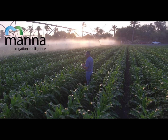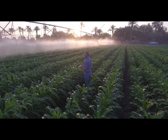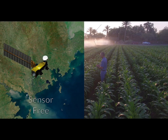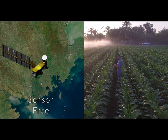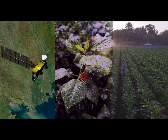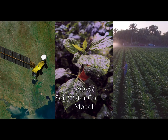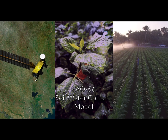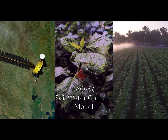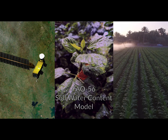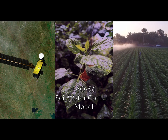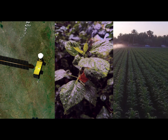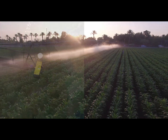Welcome to MANA's new irrigation scheduling page. The sensor-free MANA irrigation recommendation solution now includes a new addition: an FAO 56 based soil water content module, on top of the existing proprietary satellite based model for evapotranspiration. This enables MANA to provide a detailed recommended irrigation plan with actual days of irrigation.